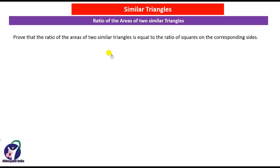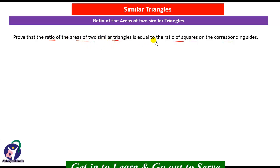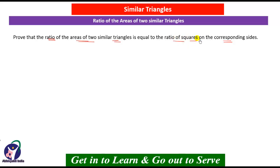Students, let us start with the new topic, i.e., Ratio of the Areas of Two Similar Triangles. Here is the theorem that proves that the ratio of the areas of two similar triangles is equal to the ratio of the squares on the corresponding sides. The two similar triangles are given and it is said that the ratio of their areas is equal to the ratio of the squares on the corresponding sides.